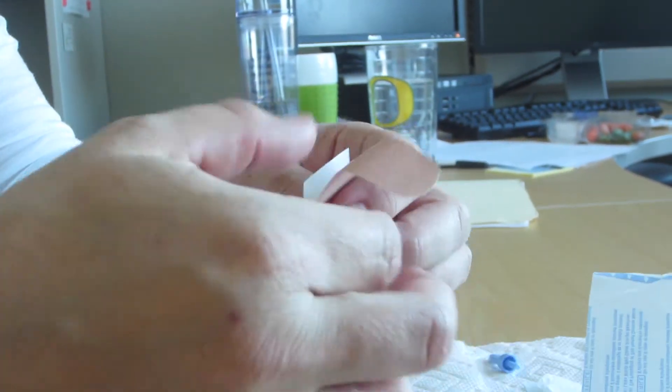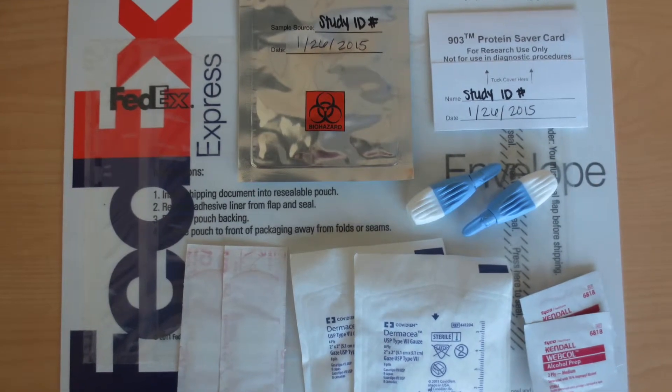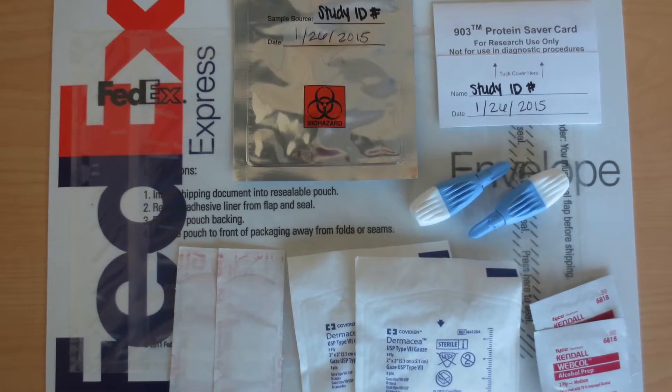Allow the dried blood spot card to air dry for at least two hours at room temperature. Then follow the written instructions for mailing back the sample by FedEx. Thank you.